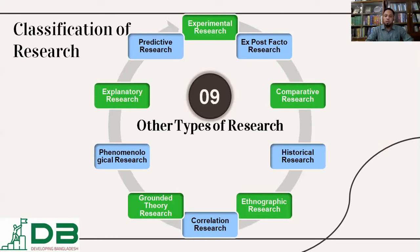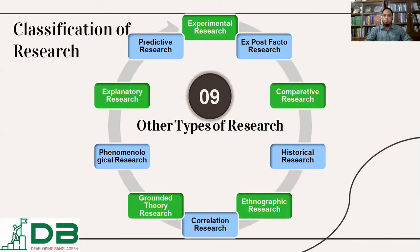Grounded theory research. Grounded theory is a systematic methodology in the social sciences involving the construction of a new theory through the analysis of data. Grounded theory is mainly an academic sort of research. It analyzes historical or classical data and uses those to develop a new theory.